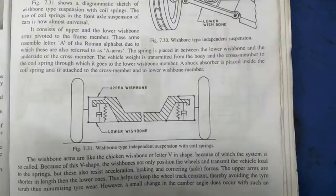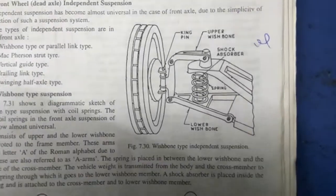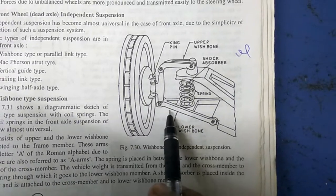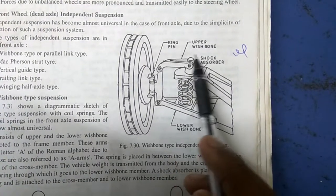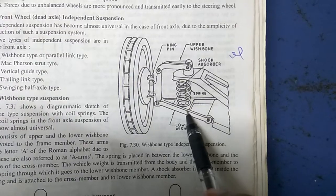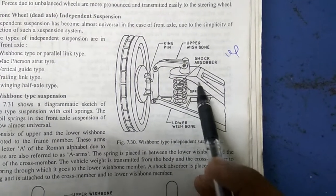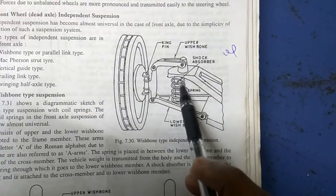The basic construction of a wishbone type suspension consists of a lower wishbone and an upper wishbone. Between the lower wishbone and the frame vehicle member, there is a coil spring attached.